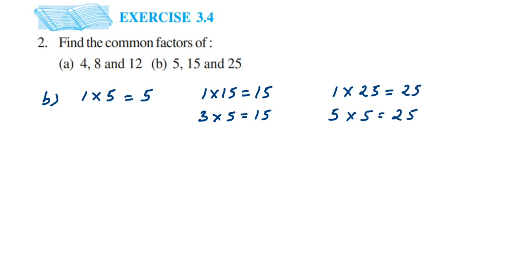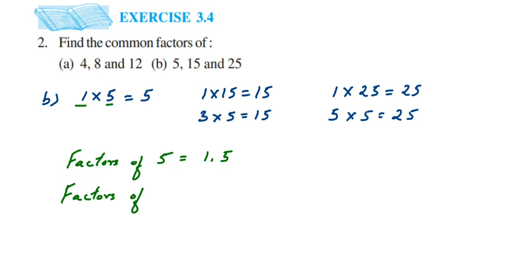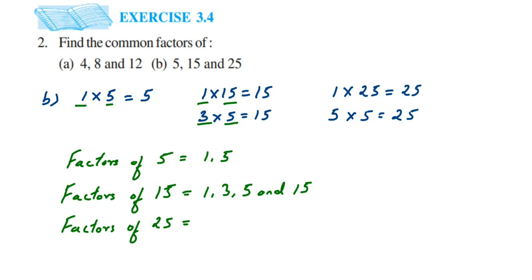Now let's write down the factors. Factors of 5: 1 and 5. Factors of 15: 1, 3, 5, and 15. Factors of 25: 1, 5, and 25 — since 5 appears twice (5 × 5), we only write it once.